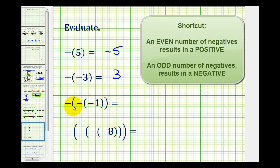So for this example, we have 1, 2, 3 negatives, so the result will be negative 1. Or of course, we could still use the reasoning that we did above. Working our way from the inside out, this would be the opposite of negative 1, which would be positive 1. And then we have the opposite of positive 1, which would be negative 1.